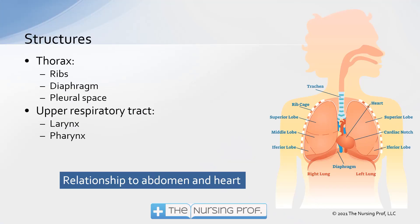Let's start out with some of the main structures of the respiratory system, starting out in the upper airway. We have our upper respiratory tract with the larynx and the pharynx, and that moves down into the thorax. The primary responsibility of the upper respiratory tract is to bring in air from outside, warm it, and humidify it before it hits the lungs and goes into the thoracic cavity.